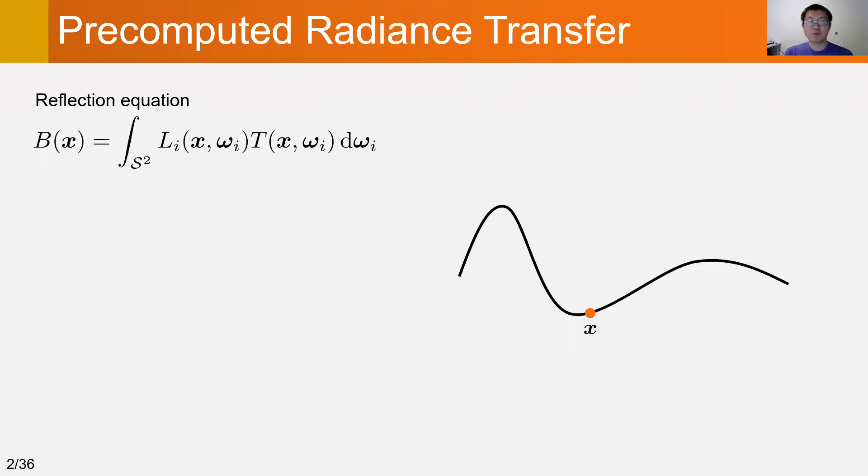Precomputed radiance transfer is a classic technique in real-time rendering. The goal is to efficiently solve the reflection equation, which is formulated as a double product integral of the incoming lighting and the transport function.